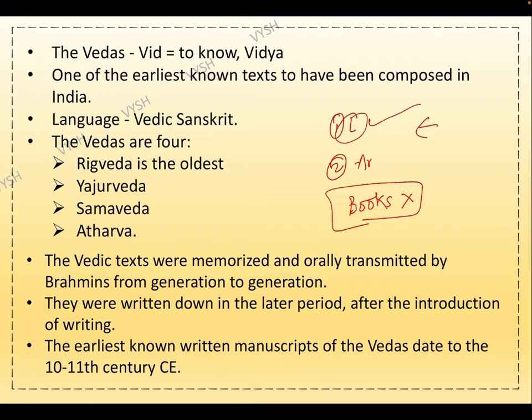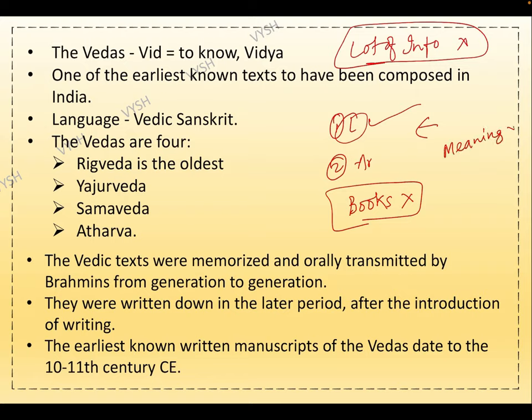The Vedas were composed around 1500 BCE, but they were actually written down much later, around the 11th century. As a result, a lot of information has been lost, and possibly many meanings were changed as per the necessities of the people at the time of writing.